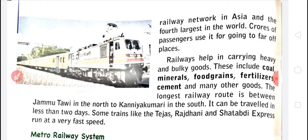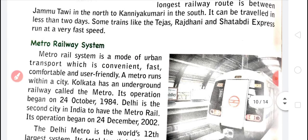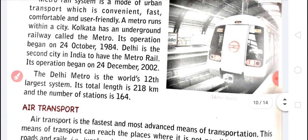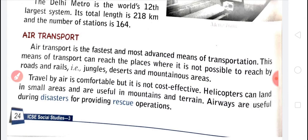Railways help in carrying heavy and bulky goods like minerals, food grains, fertilizers, and cement. The Metro train in Delhi is the twelfth largest metro system. Air transport is the fastest and most advanced means of transportation.